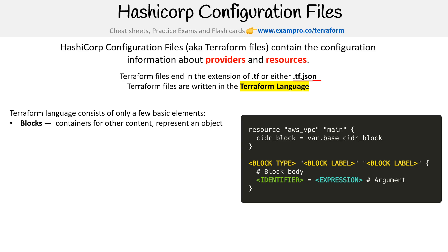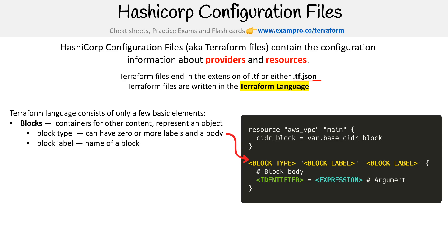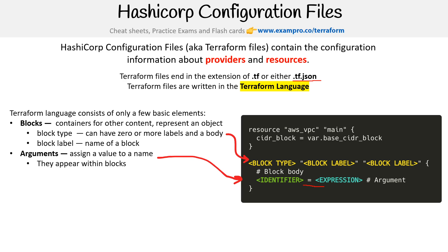Blocks are containers for other content and they represent an object. A block has a block type, which can have zero or more labels and a body. A block label is the name of a block. You also have arguments, which is what you assign a value to a name — an identifier assigned to an expression. Arguments appear within blocks.